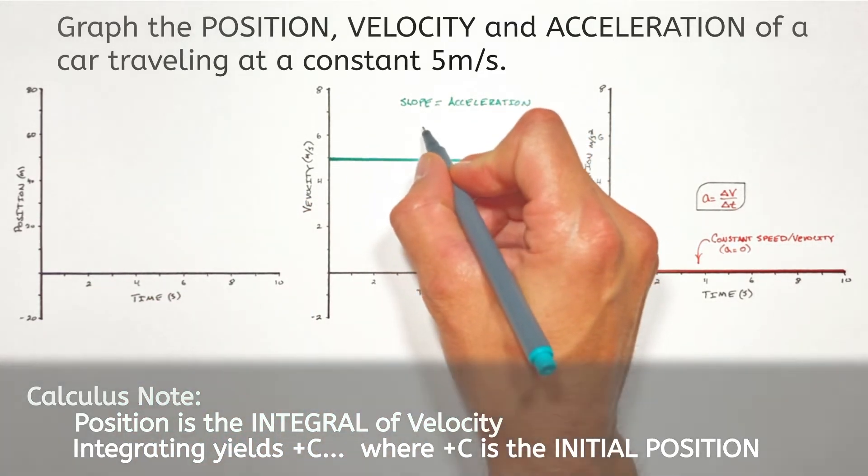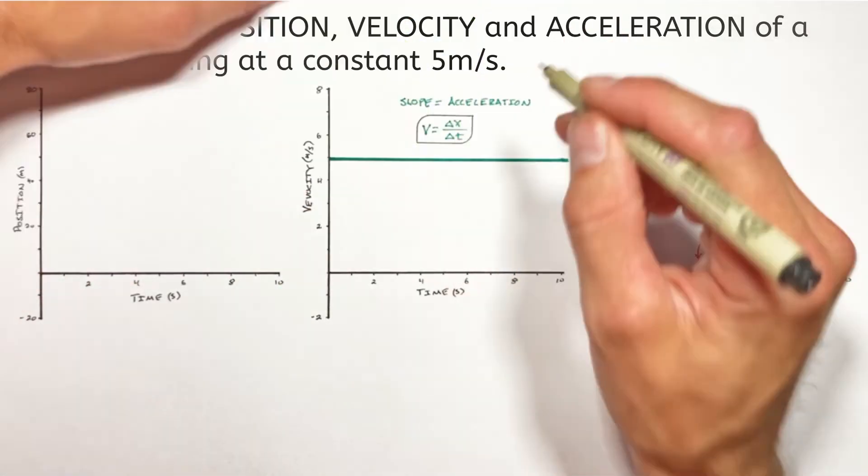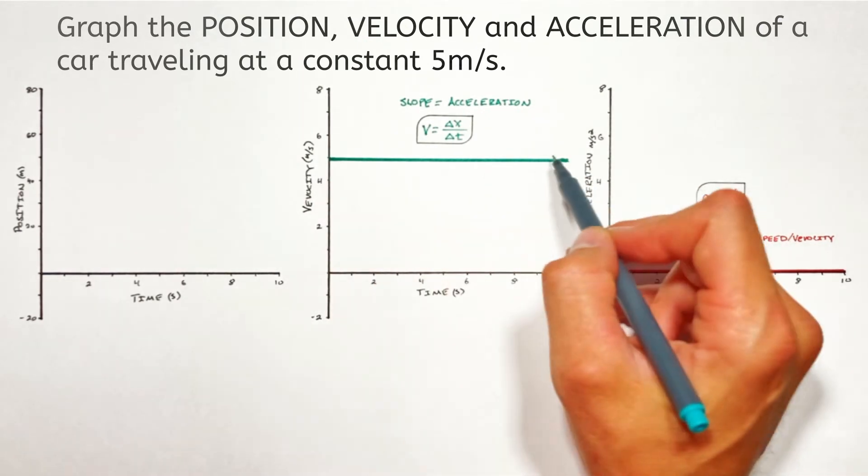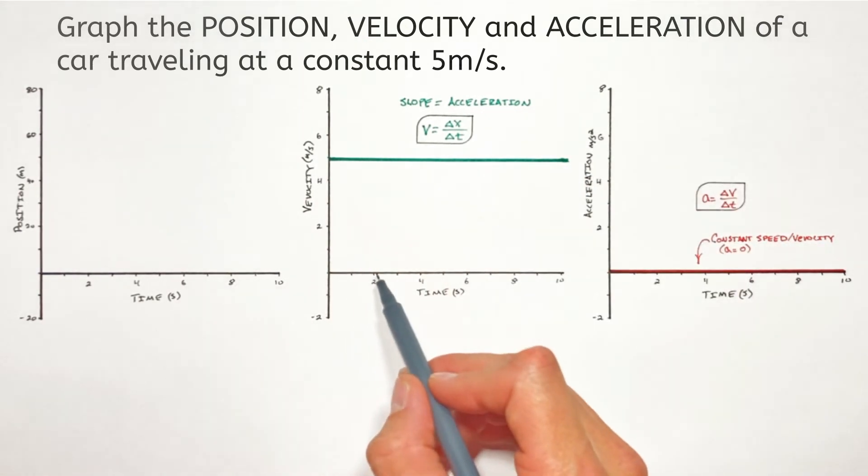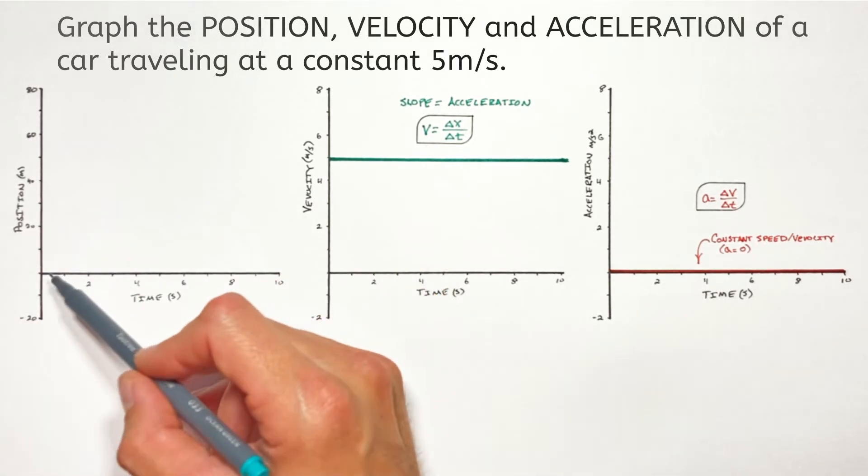Remember, velocity is given by change in position over change in time. So really what this five meters per second is telling us is that with every second that goes by, the position is going to increase by a total of five meters.